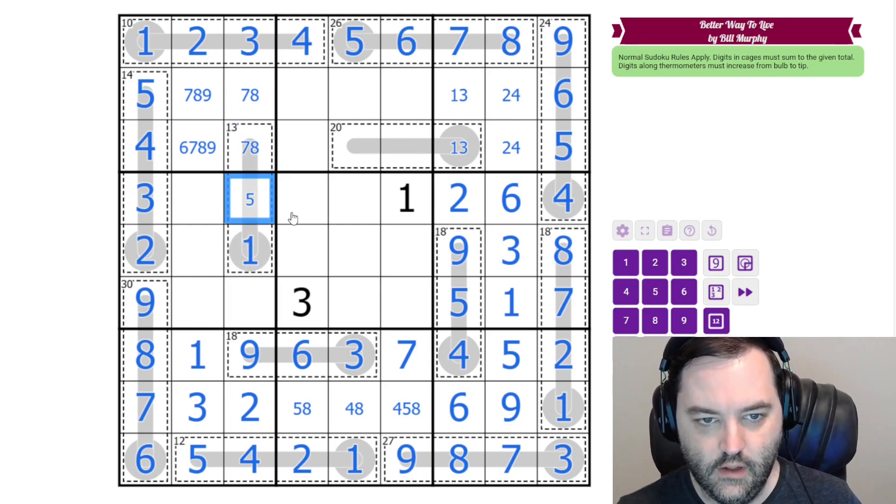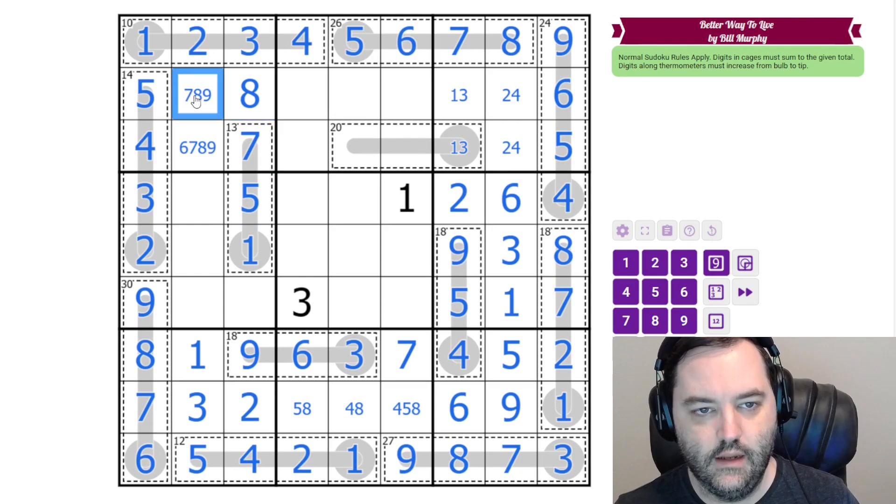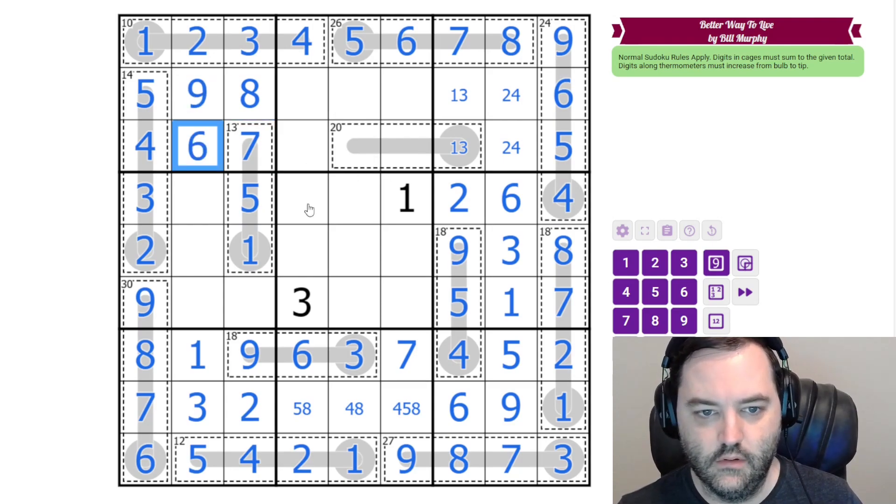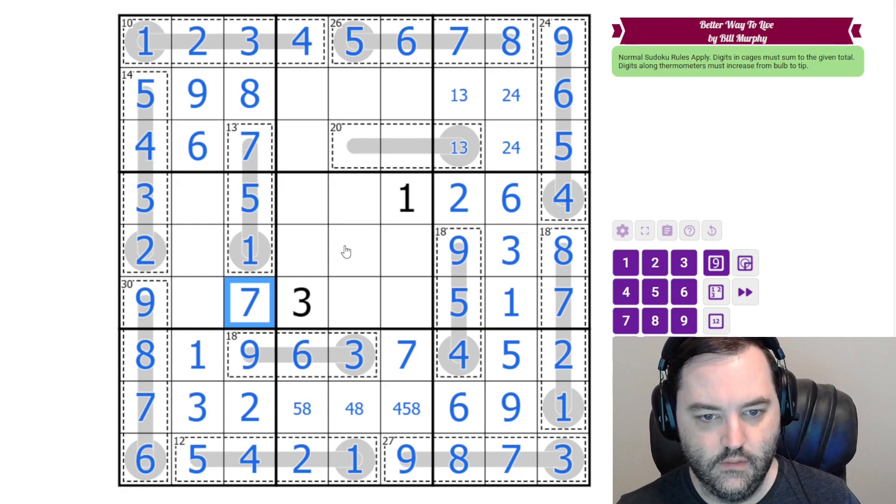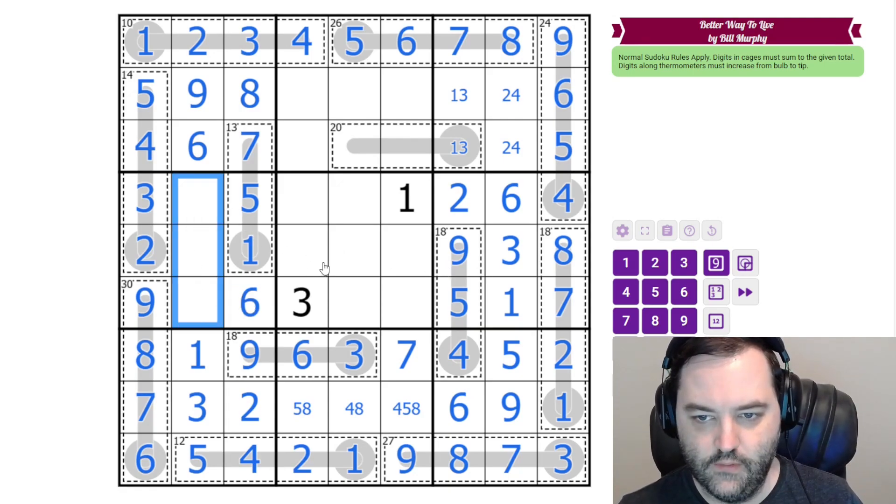This is not six. And actually, this is not four, because the four there. So this is five, seven. This is eight, nine, and six. This is six in the column. And then these are four, seven, and eight.